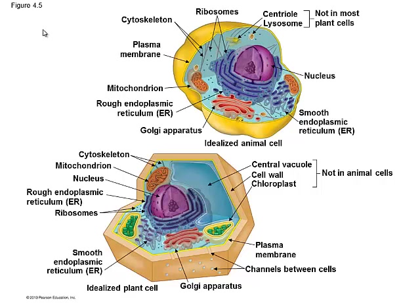When we talk about eukaryotic cells, we have a much more highly organized cell. Cell walls can be seen in plant cells.